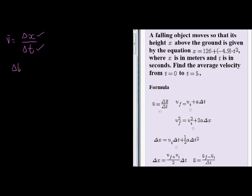Let's start with change in time. Change in time is t₂ minus t₁, the later time minus the earlier time, so that means it's 5 minus 0, which is equal to 5.